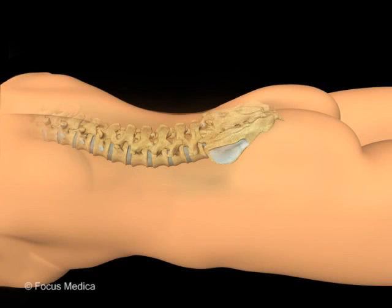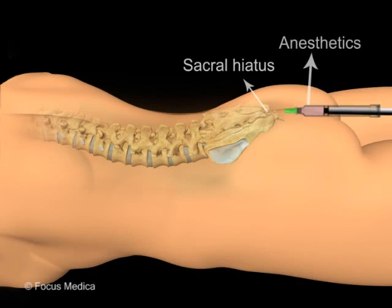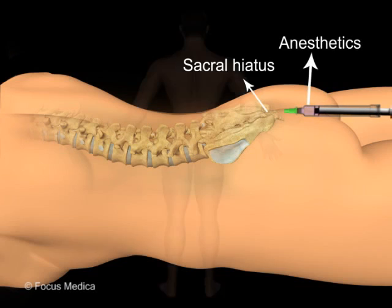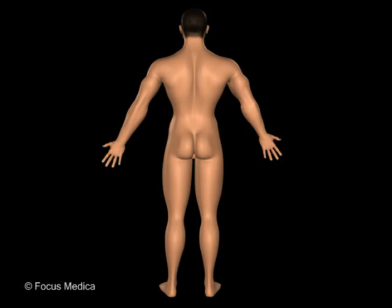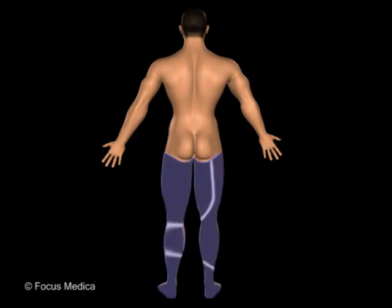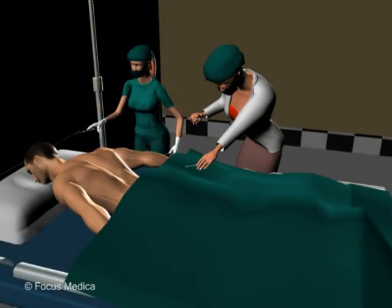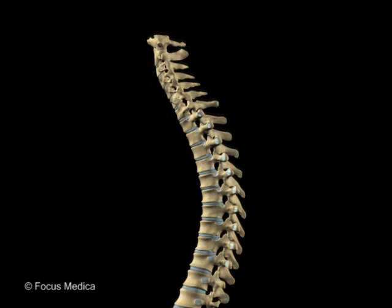Epidural sacral anesthesia is a process of injecting local anesthetics into the epidural space near the sacral hiatus to produce a reversible loss of sensation and relieve pain during surgical procedures.